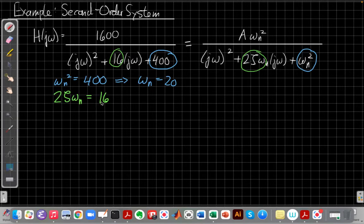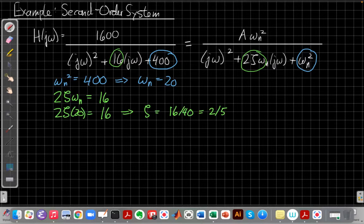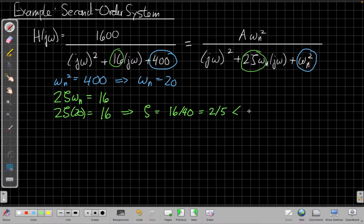And so I have that 2ζωn is 16, and now I'm going to plug in my ωn that I just solved for. And when I do that, I get that my ζ is 16/40 or 2/5. So my damping factor for this one is 2/5, which comparing to our cutoffs from the last one, is less than 1 over root 2. So this is an underdamped system where we expect to have a resonant peak on it.